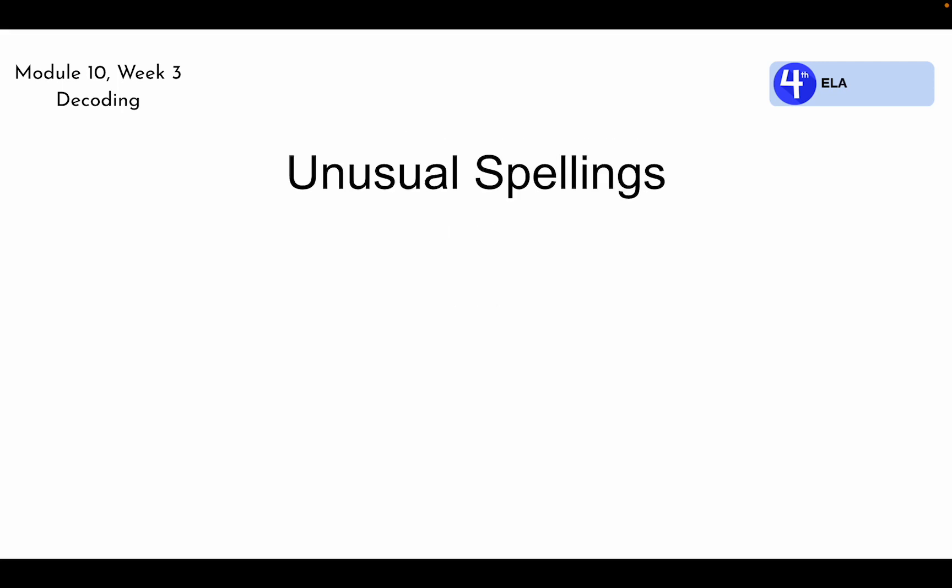But in words with unusual spellings, the short e sound can sometimes be spelled with the letters ea, as in the word meant. The word is pronounced meant with the short e sound instead of meant, like one might think, based on long e spelling patterns that we recognize. Because these unusual spellings don't follow common rules, it's helpful to memorize the spellings associated with the sounds.